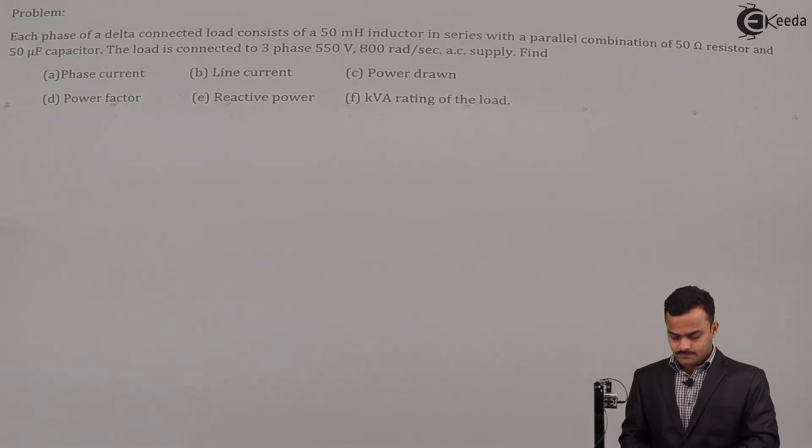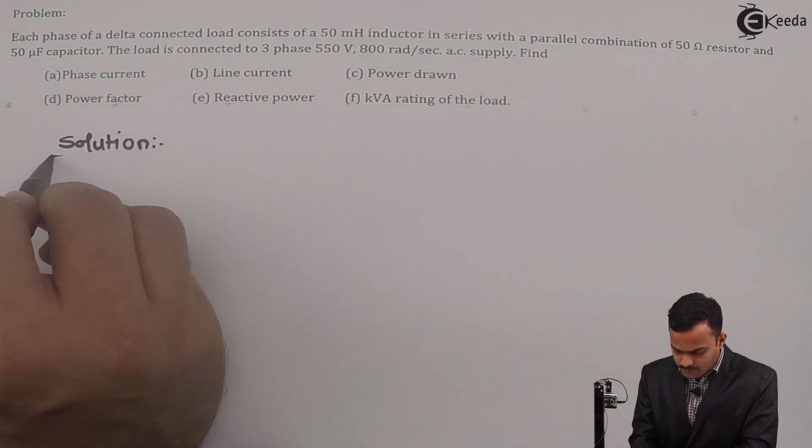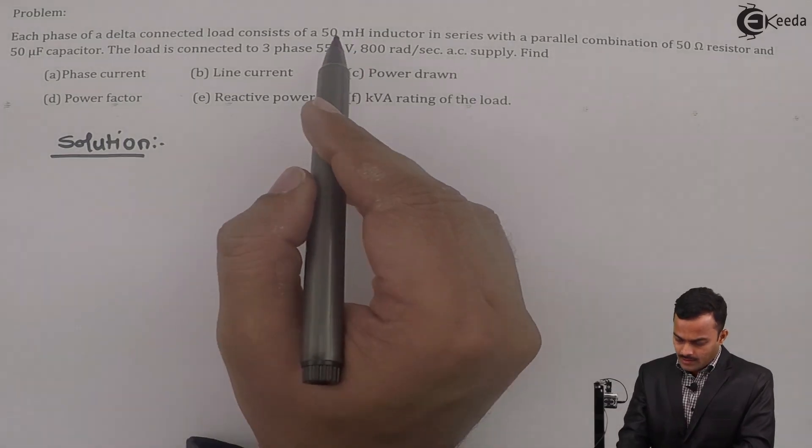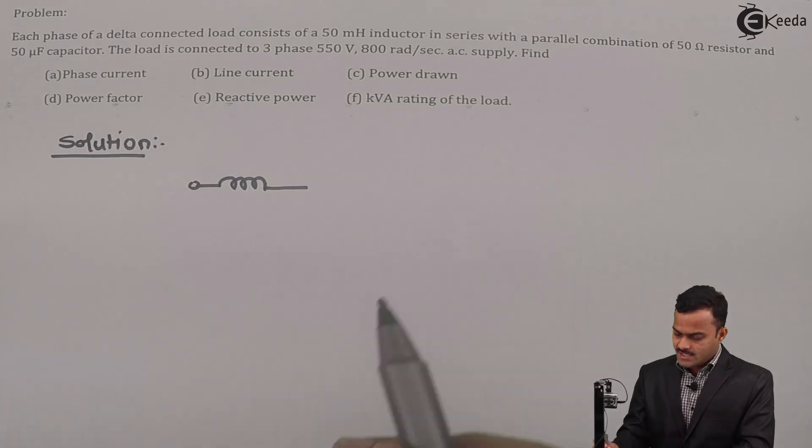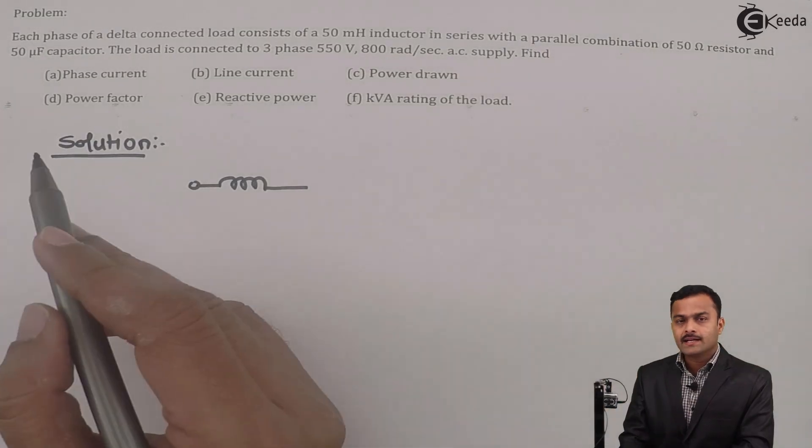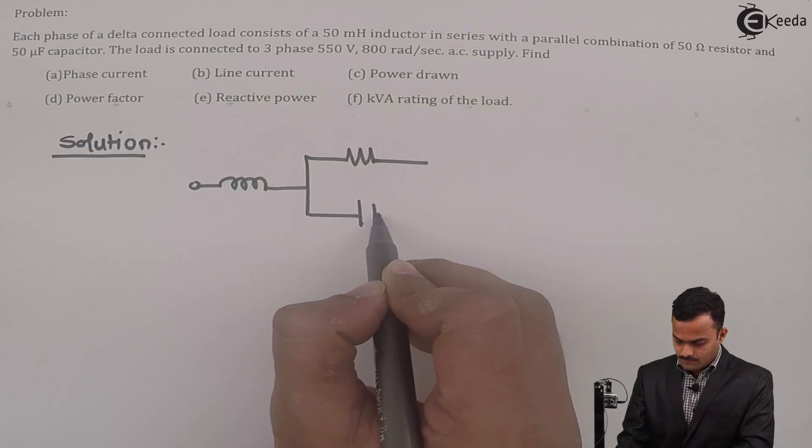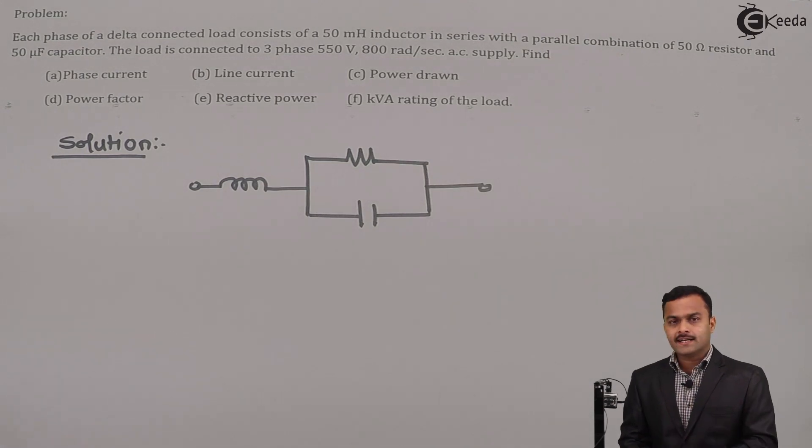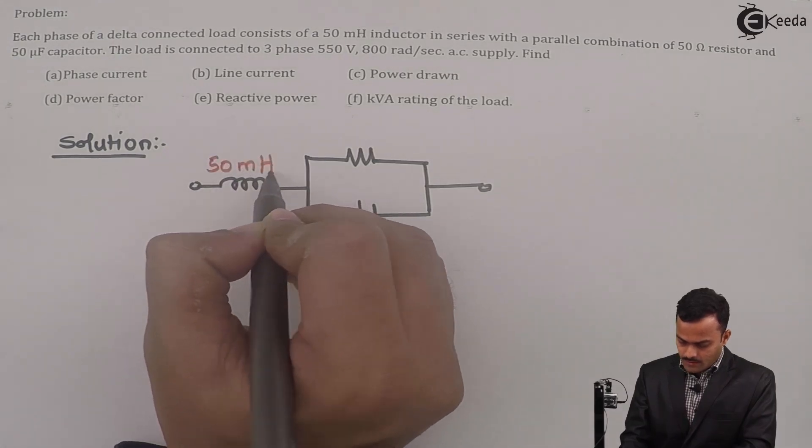Let's see how to solve this problem. They have given a circuit which is contained in delta and each phase of a delta consists of 50 millihenry inductor in series with a parallel combination of 50 ohm resistor and 50 microfarad capacitor. This particular structure is nothing but one phase of delta connected load, this L is 50 millihenry, resistance is 50 ohm and capacitor 50 microfarad.